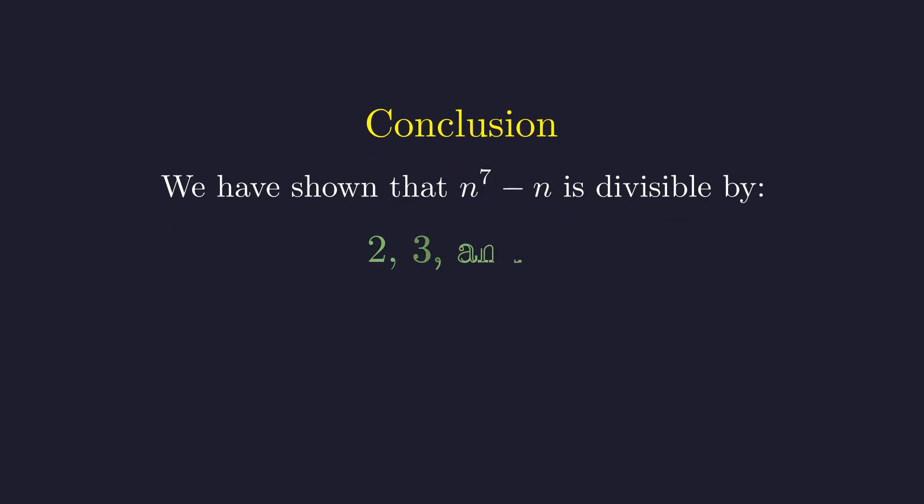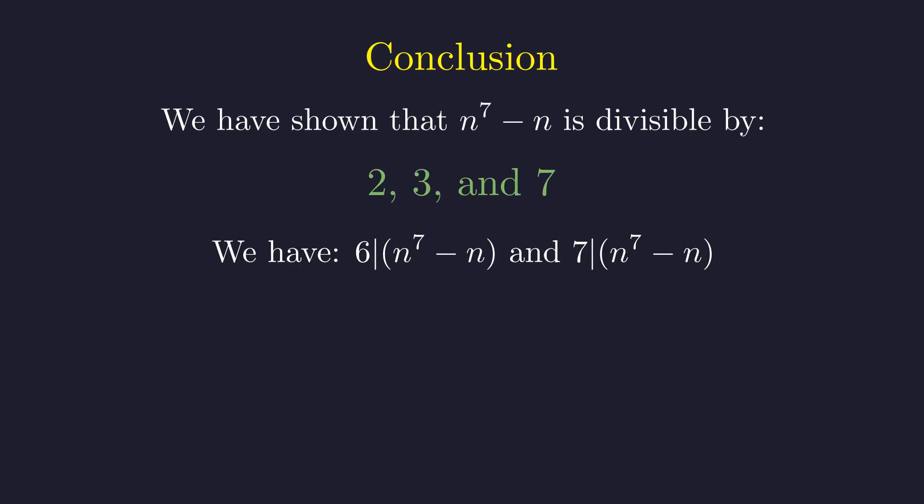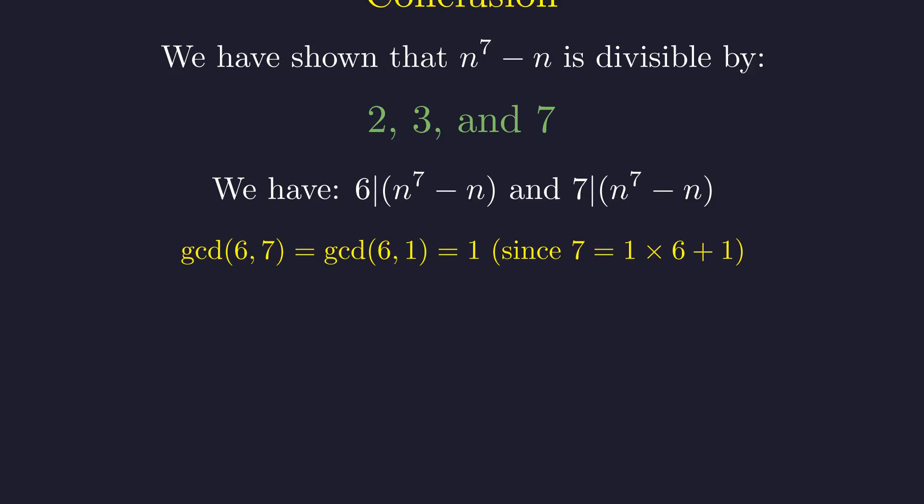Time to bring all the pieces together. We've shown that n^7 - n is divisible by 2, 3, and 7. So we know that both 6 and 7 divide our expression. The key insight is that 6 and 7 share no common factors. They're what we call co-prime. You can verify this with the Euclidean algorithm, or just notice that consecutive integers never share factors.